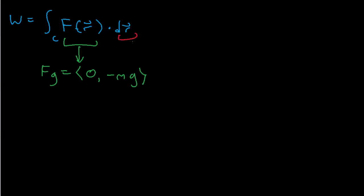And for dr, we can do a clever trick where we multiply it by 1, that's dt over dt. And we can rearrange this to become dr over dt times dt. And this lets us change the line integral into a normal definite integral that we're familiar with.